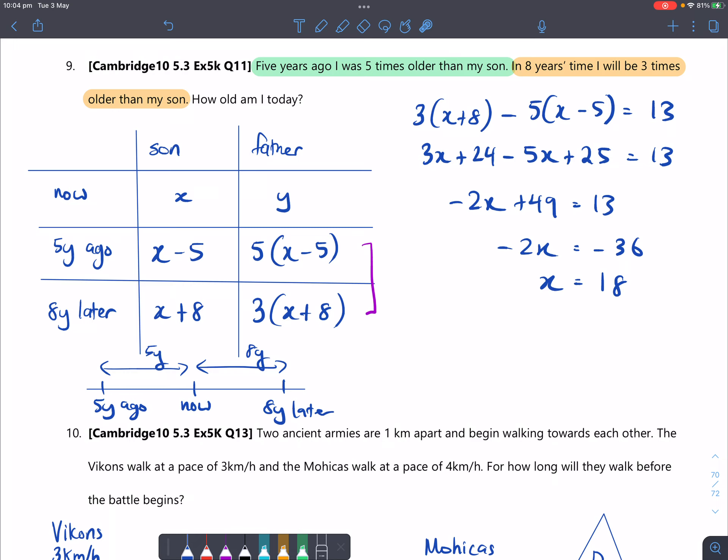So what you can do here is you can substitute in this number into any one of these for the father's age. So I can sub it into this one here because that would become the father's age five years ago. So he would become 5 times 18 minus 5, which is basically 5 times 13 and that's 65.